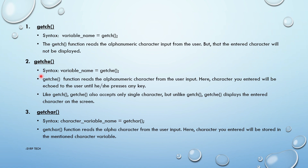Now getche. The syntax of getche is: variable_name = getche(). It is similar to getch, but it reads an alphanumerical character and the character you entered will be echoed — displayed on the console until you press any key. Unlike getch, getche displays the entire character on screen. The only difference between getch and getche is that getch does not display the character, while getche does.